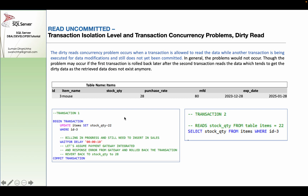Let's look at an example. We have a stock quantity of items in the table. The stock quantity of item ID 3 is 28. In transaction 1, there is a first update on the ID 3 row. Transaction 2 does: SELECT stock_quantity FROM items WHERE id = 3.